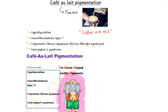The mnemonic is 'He Never Played With Pigments' — follow the red letters. H for hypothyroidism, N for neurofibromatosis type 1, P for polyostotic fibrous dysplasia, and the next P for Peutz-Jeghers syndrome.